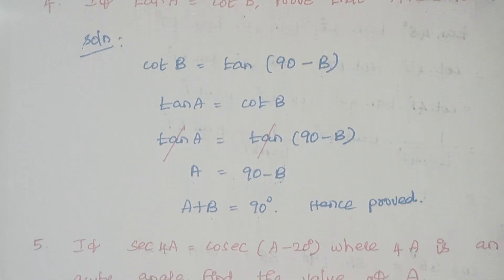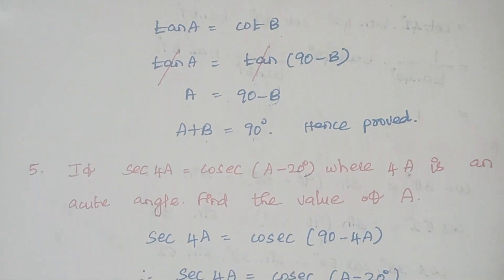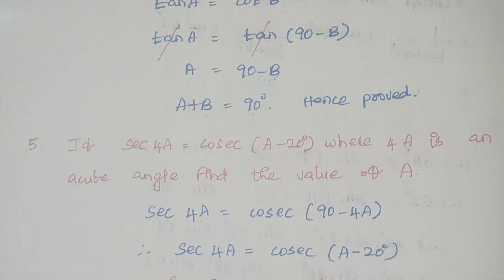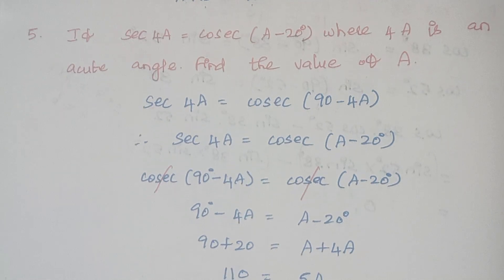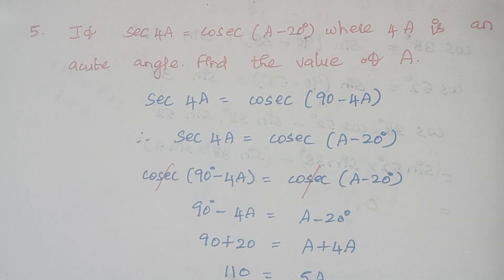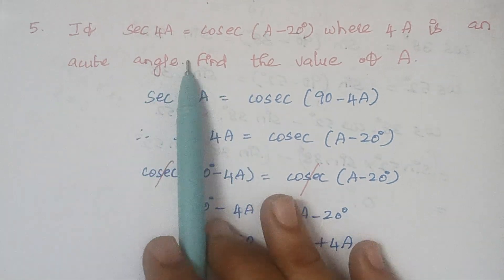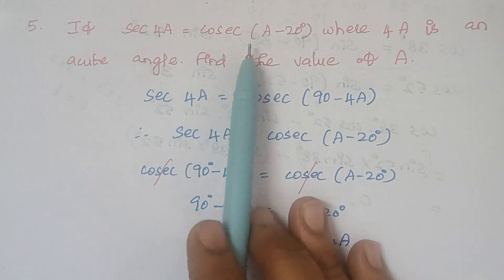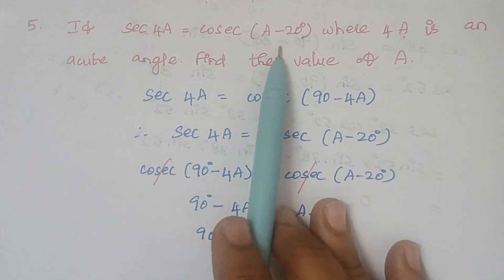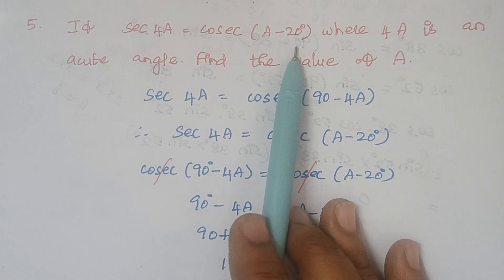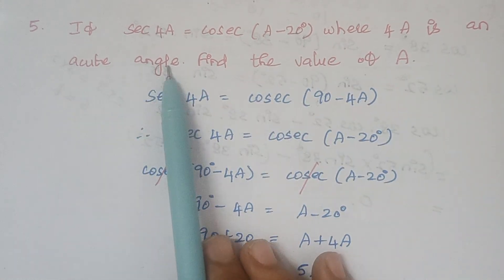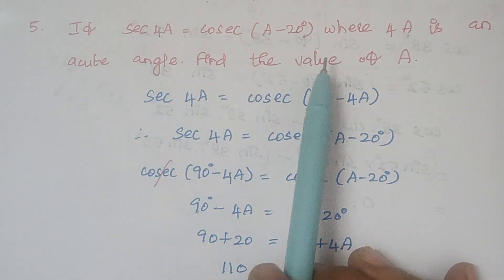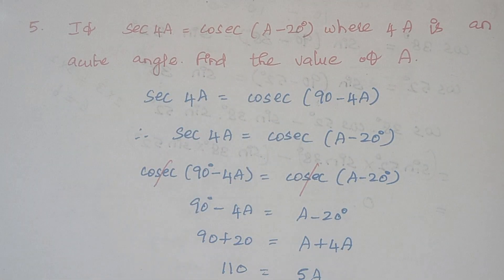Now we proceed with the fifth problem. If secant 4A is equal to cosecant(A minus 20), where 4A is an acute angle, find the value of A.